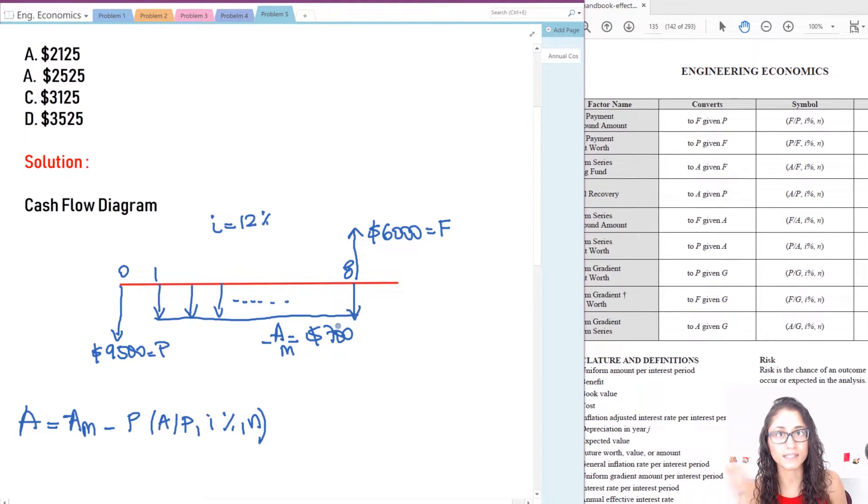Now I need to convert to A given F. So I'm going to use this equation right here. But this one is going to be positive. Now, because this is an inflow, it's going to be positive. So this is positive. This is negative. And this is negative because it's an outflow.